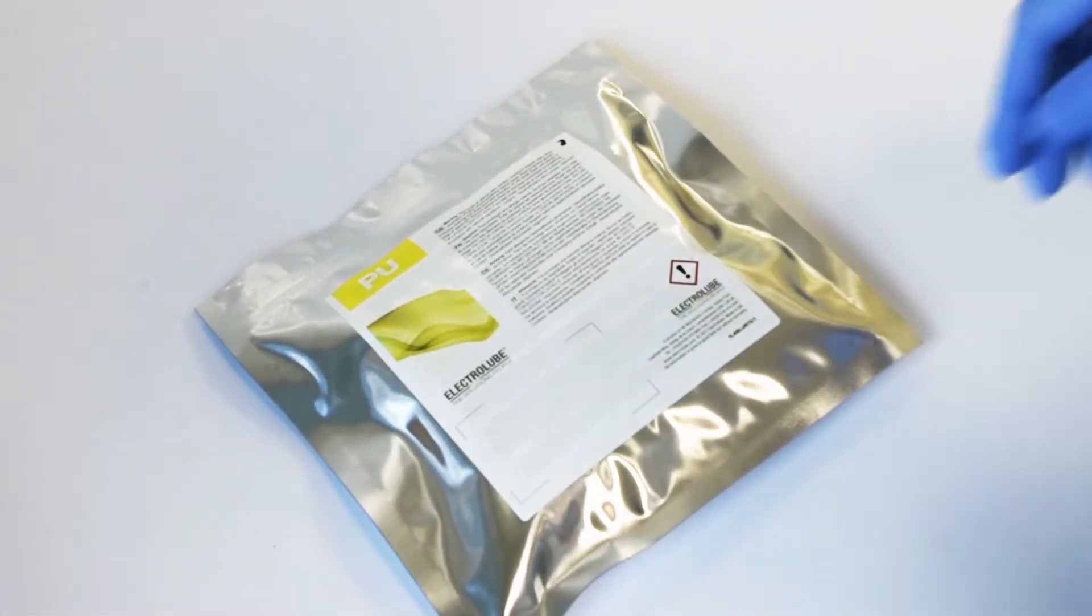It is important with a polyurethane not to remove the resin pack from the aluminium foil until immediately before use to avoid moisture ingress.